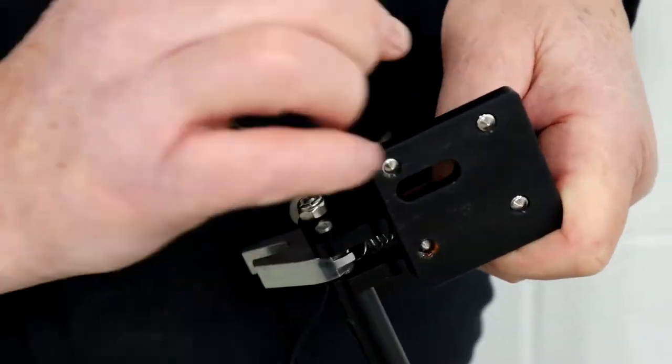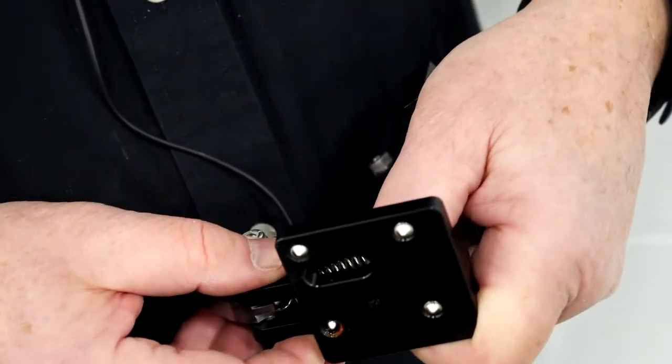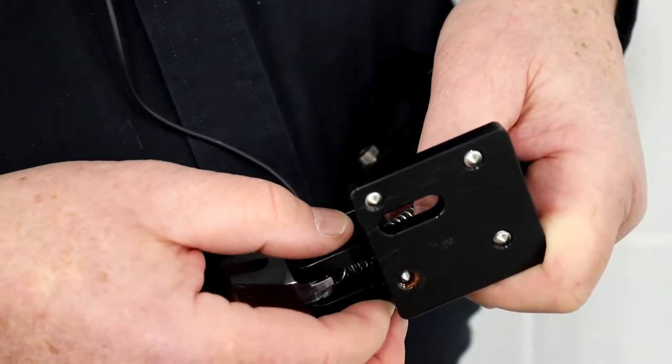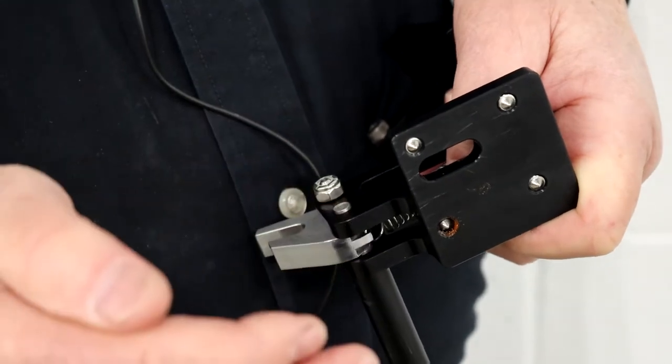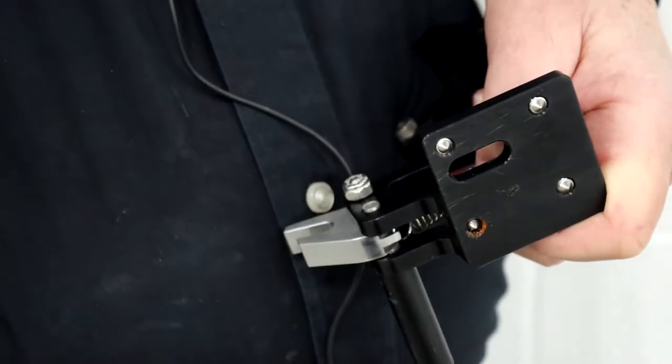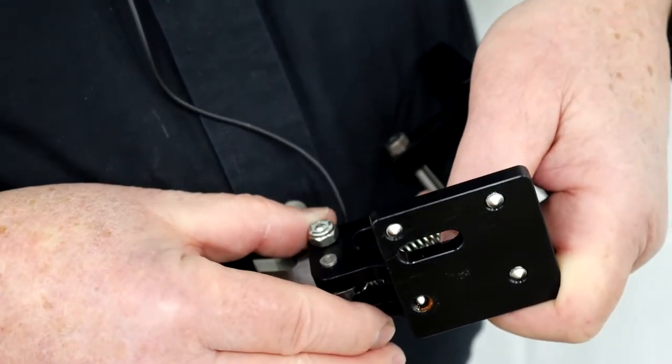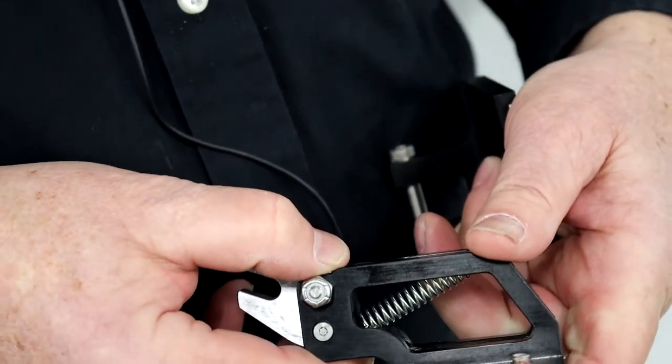With the adjustment of these screws, you can change the angle of the latch to tighten or loosen the hatch itself. If the hatch has got a little bit of play in it, you would adjust the angle on this to tighten that up.